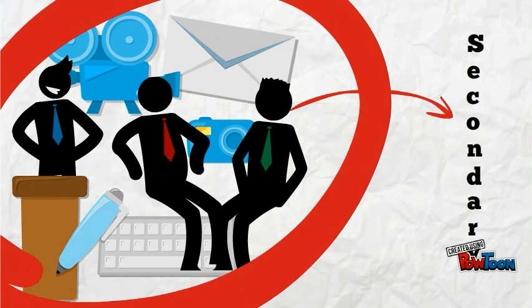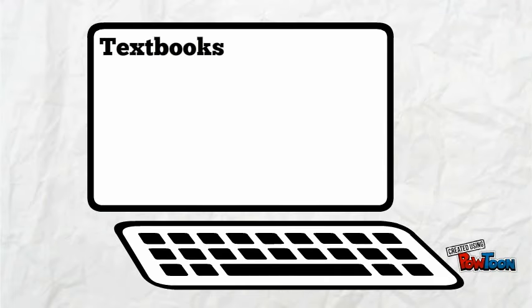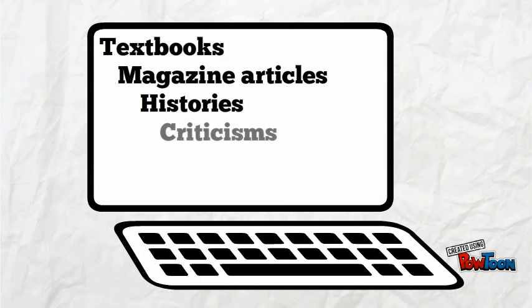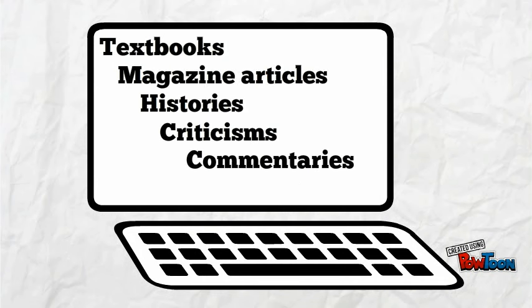They may have pictures, quotes, or graphics of primary sources in them. Some types of secondary sources include publications such as textbooks, magazine articles, histories, criticisms, commentaries, and encyclopedias.